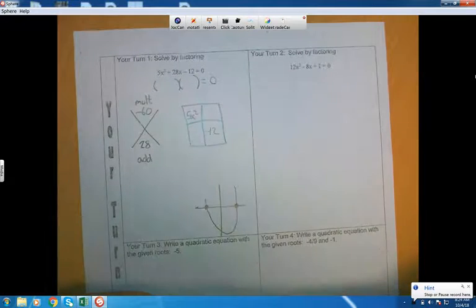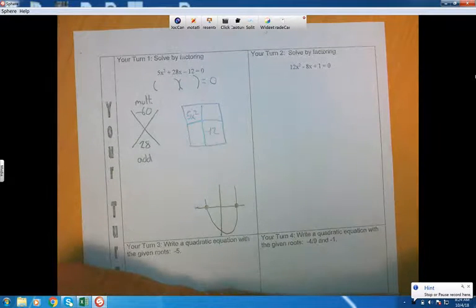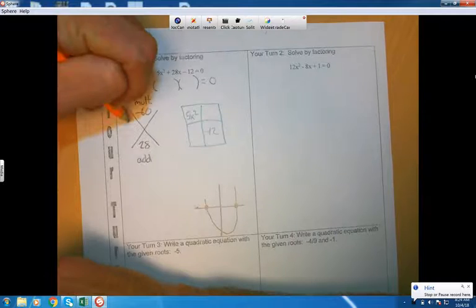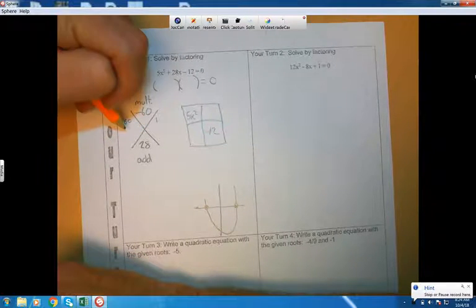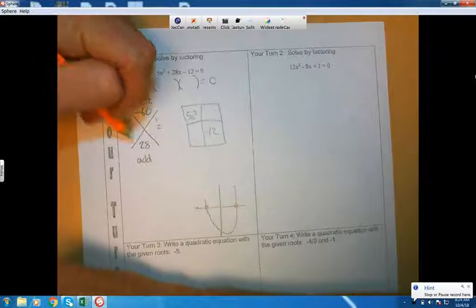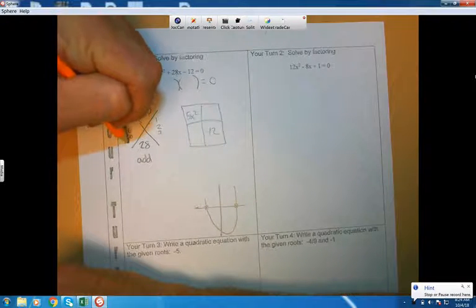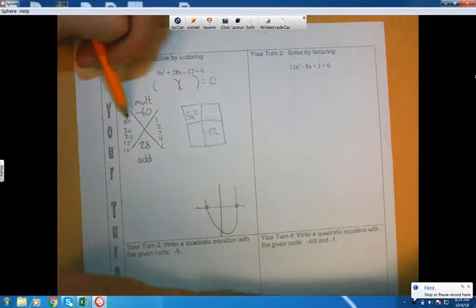The way I do it is I start with the multiplying, and I just start looking for numbers that multiply to negative 60. In fact, right now, I don't even care about the negative. I'm just looking for numbers that multiply to 60. So 60 times 1, 30 times 2, let's see, 20 times 3, that would be 60, 15 times 4, 10 and 6. I think I got them all. And so I've got all these combinations of numbers that multiply to 60...